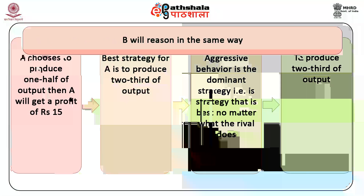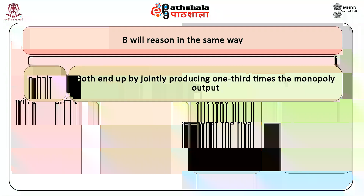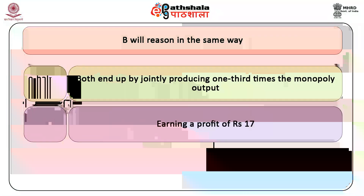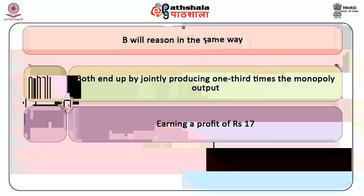Firm B will reason in the same way. So as a result, both end up producing two-thirds of the monopoly output and earning a profit of Rs 17 each. This leads us to the breakdown of cooperation.